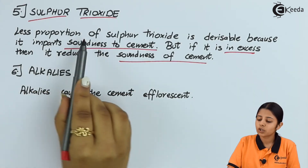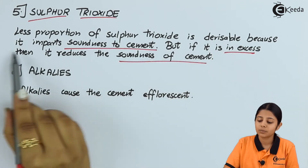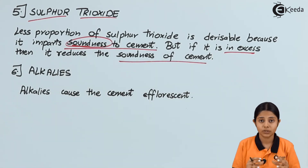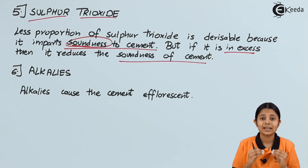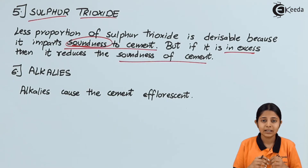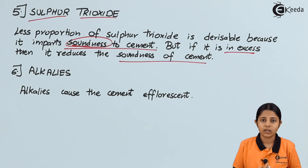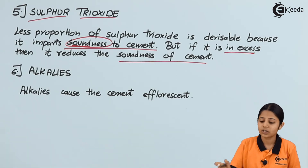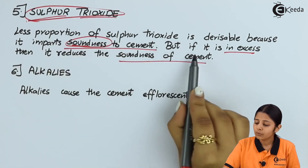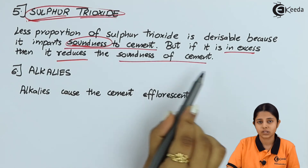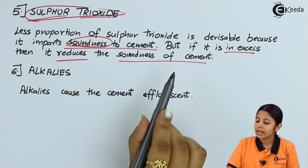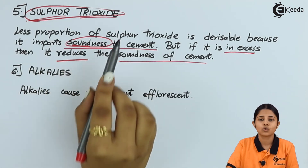Sulfur trioxide is used in less proportion and it is desirable because it imparts soundness to the cement. Soundness means good setting properties and maintaining a good volume of the cement. The cement can expand, but we want only a little expansion. Volume and strength combine together to form soundness of cement, which is provided by sulfur trioxide. However, if used in excess, it will reduce the soundness of cement, which is not desirable. Sulfur trioxide must therefore be used in proper quantities.